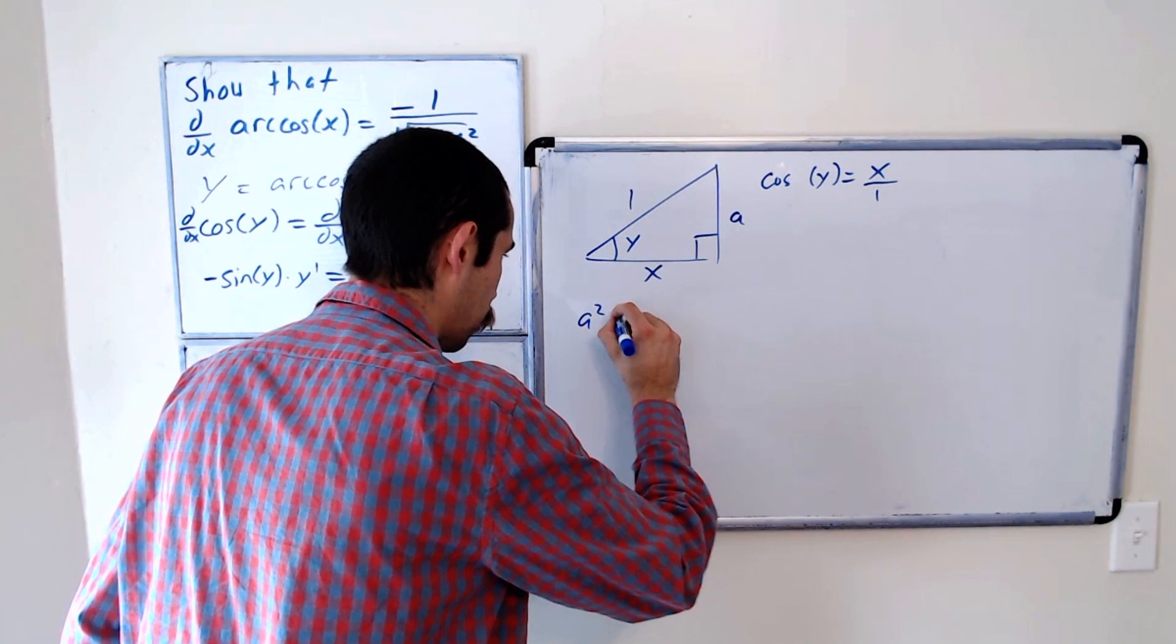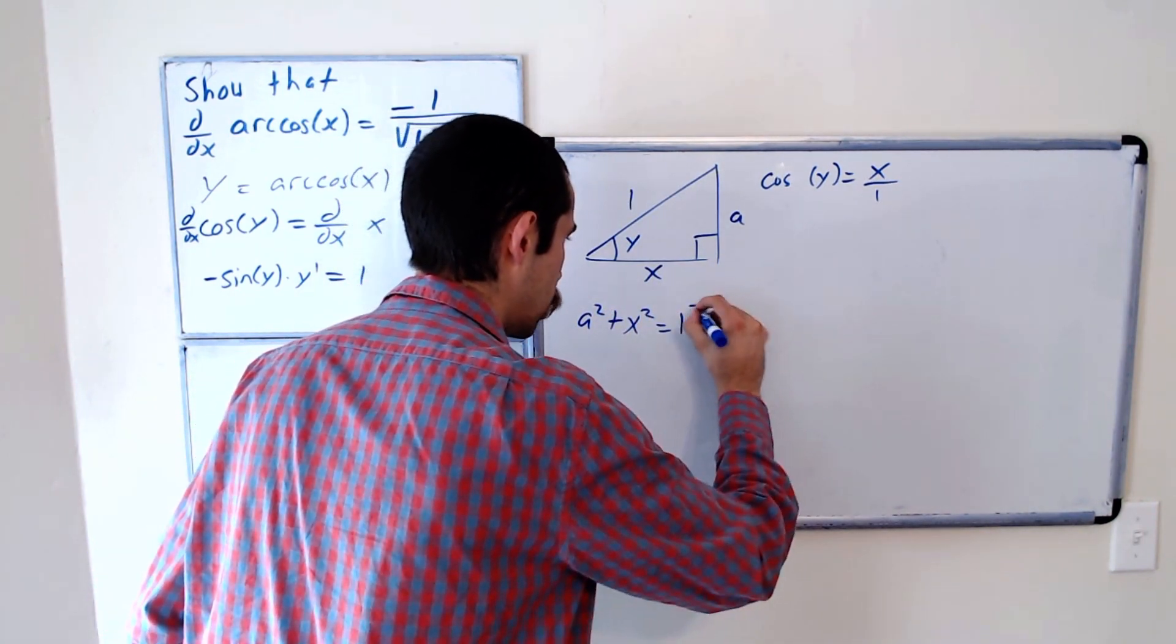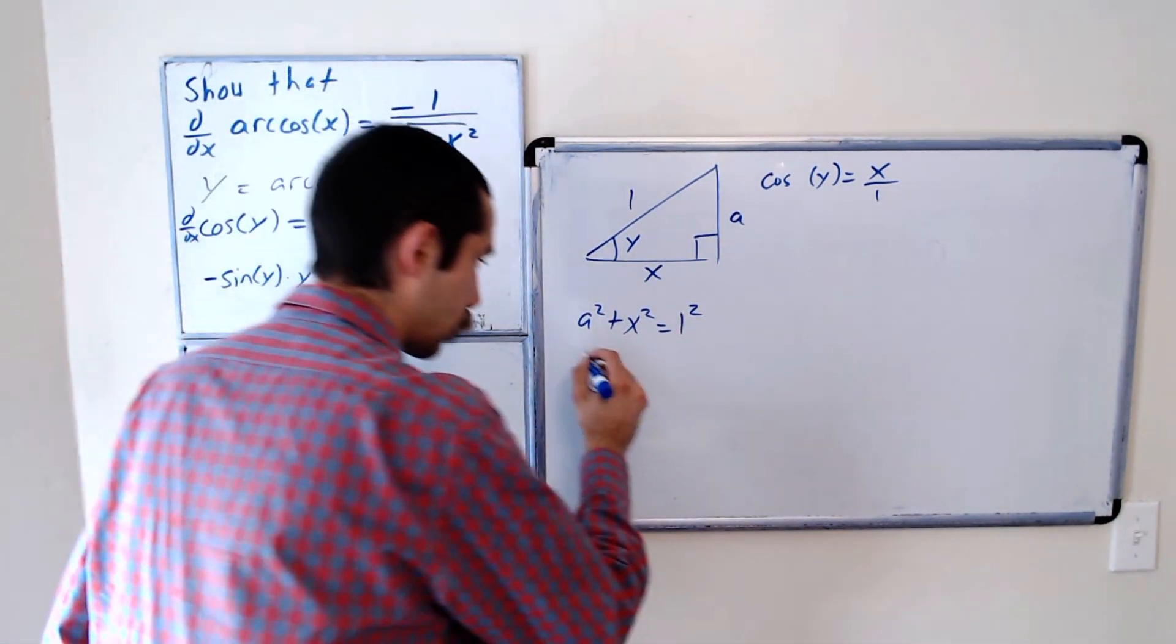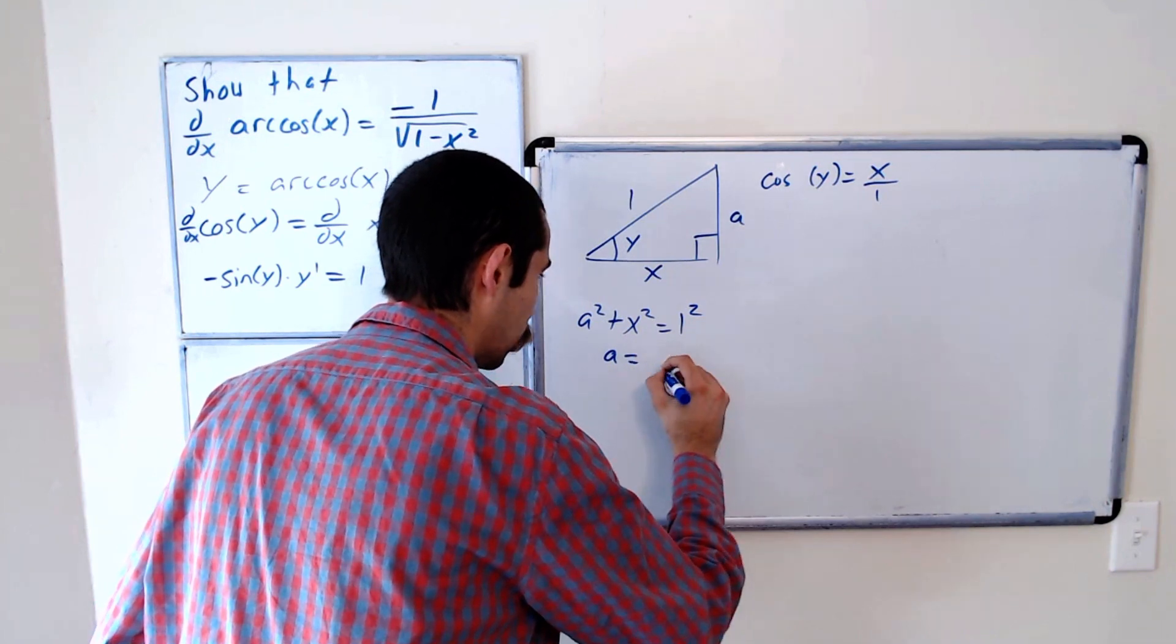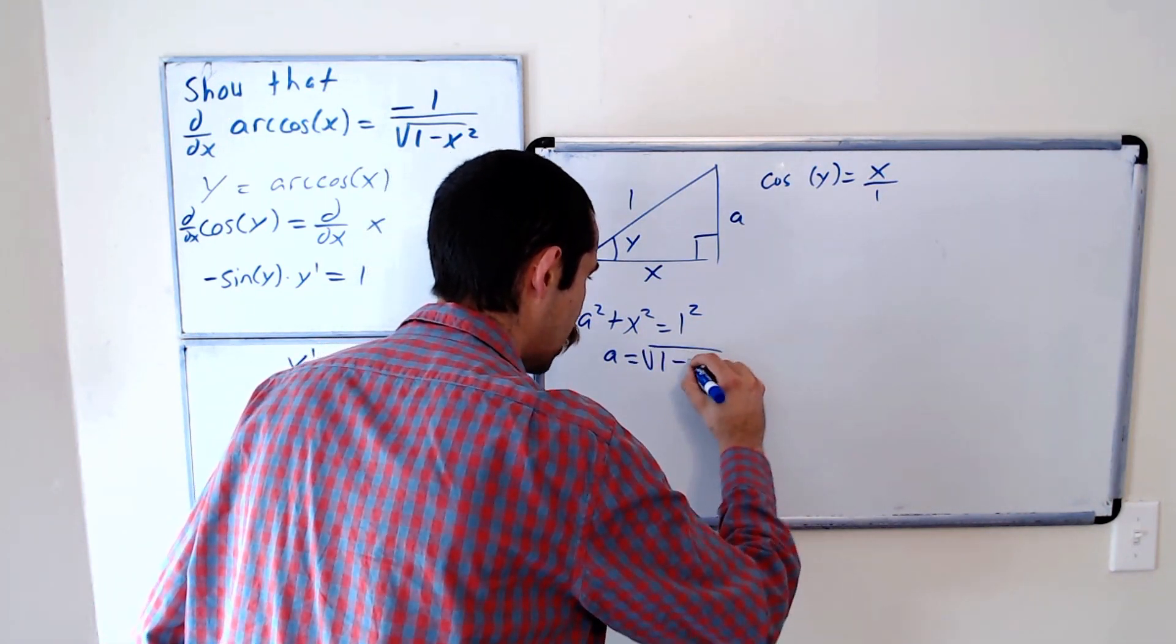And we know a squared plus x squared equals 1 squared. Solving for a, we have a is equal to the square root of 1 minus x squared.